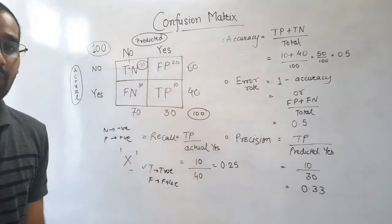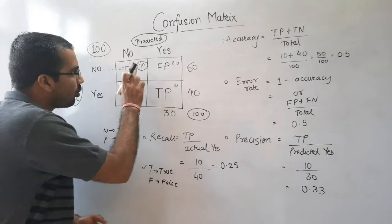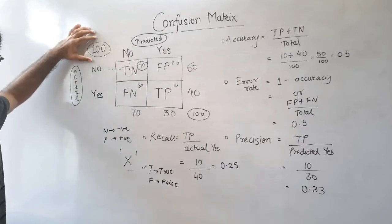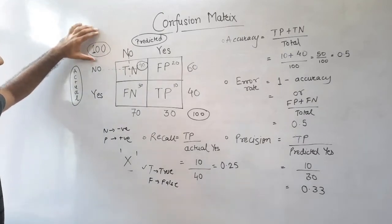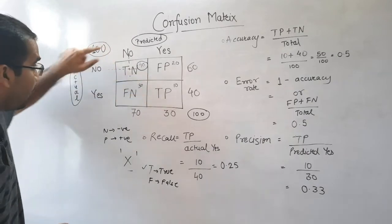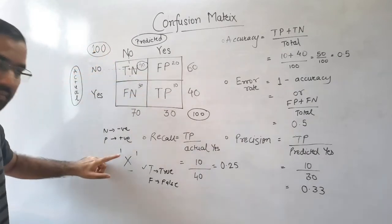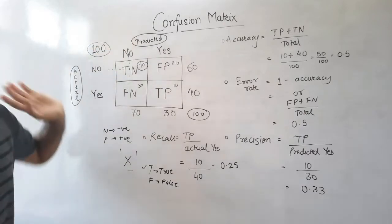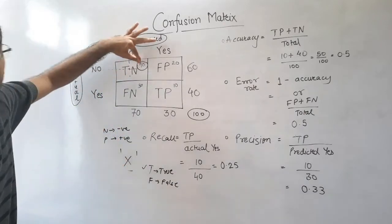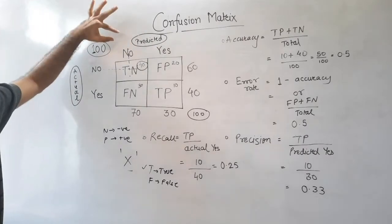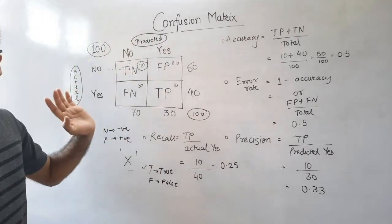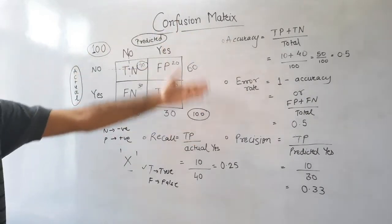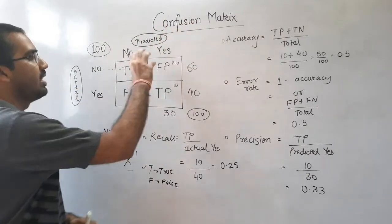A figure of 40 is shown in this cell. This means that out of 100 samples, there are 40 such samples which are in reality negative for disease X — actual no — and the doctor also predicted no for those same 40 samples. That figure of 40 will be used ahead to derive other important metrics.